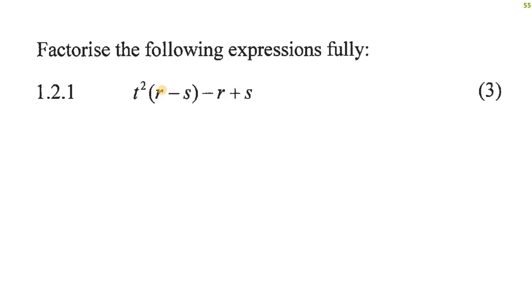So what I can see is that this part here is almost the same as this. But the problem is that this R is positive and the S is negative. Can you see that? So here we have an R that is positive and an S that is negative. Here we have an R that is negative and an S that is positive. So can you see it's exactly the opposite way around?